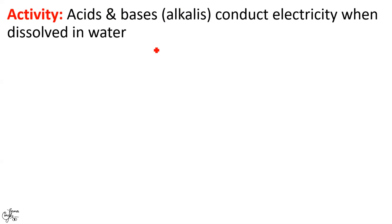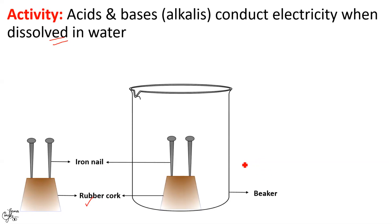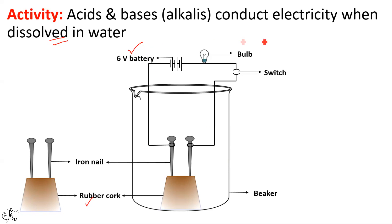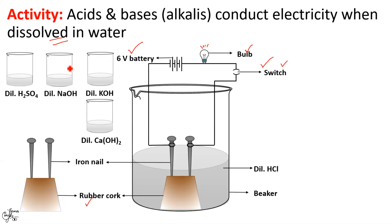Since acids release H⁺ ions and bases release OH⁻ ions when dissolved in water, they produce ions which are charged carriers, giving acids and bases the common tendency to conduct electric current. Let us perform an activity to investigate this. We take a rubber cork, fix two iron nails on it, place the cork in a beaker, and connect the nails to a six-volt battery through a bulb and a switch. We carefully pour dilute hydrochloric acid into the beaker, switch on the current, and observe that the bulb glows.